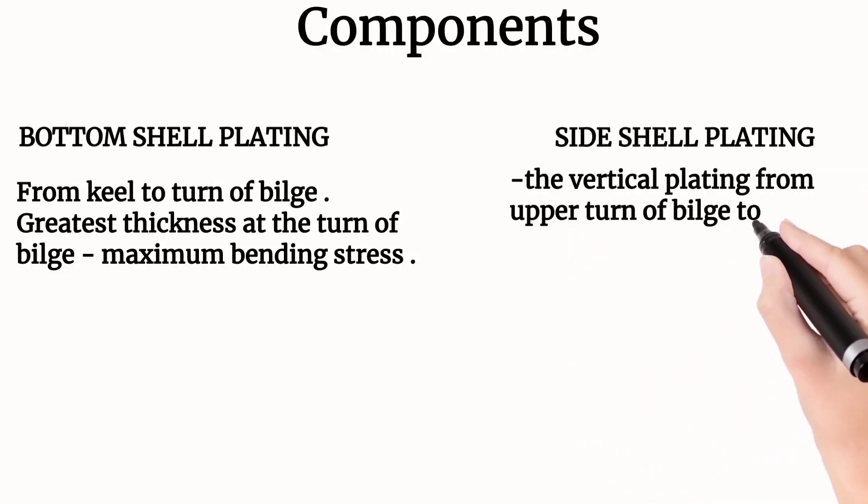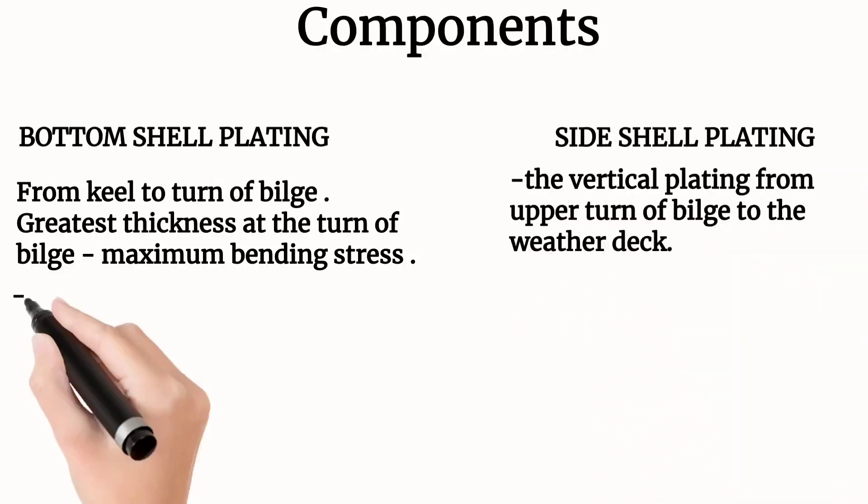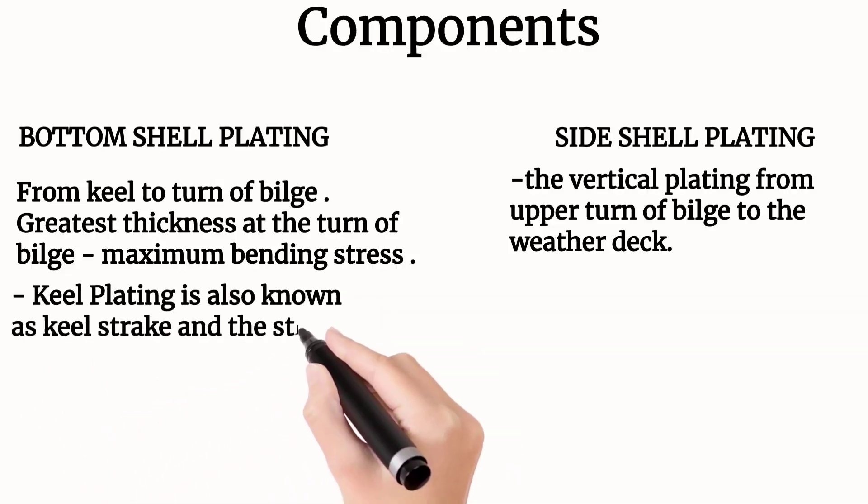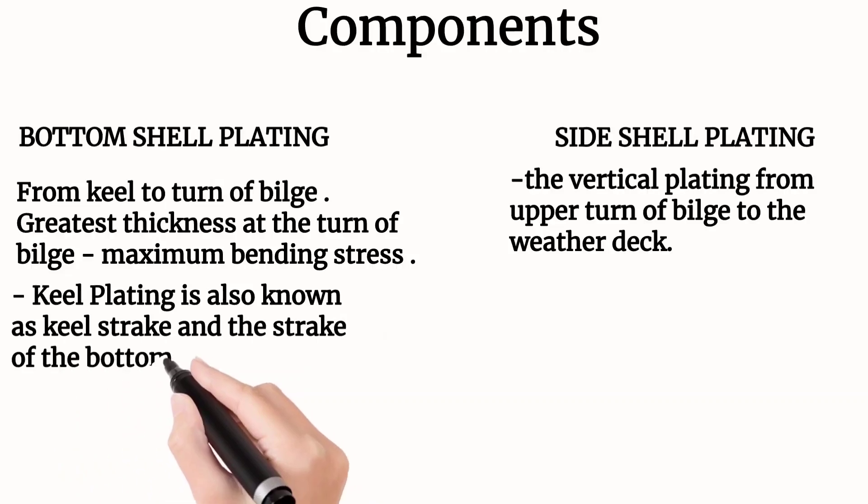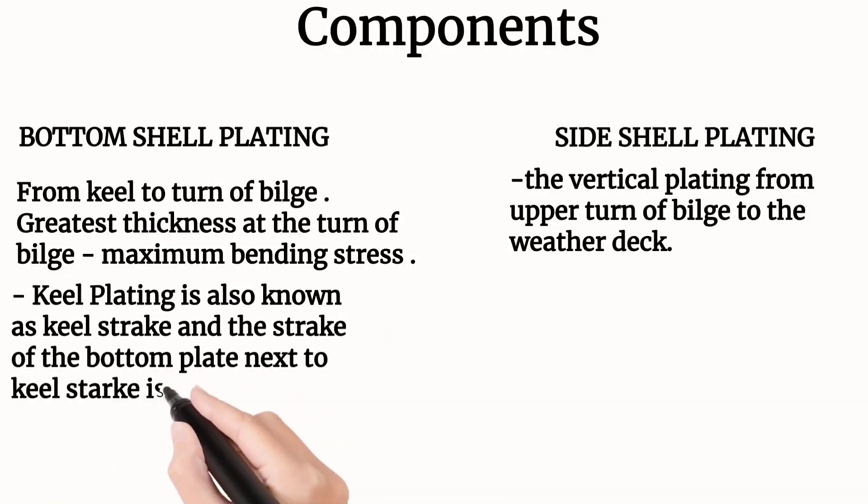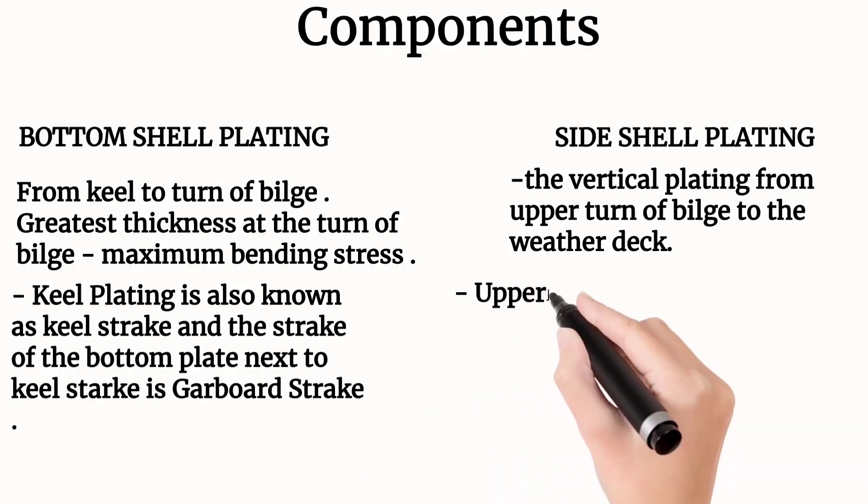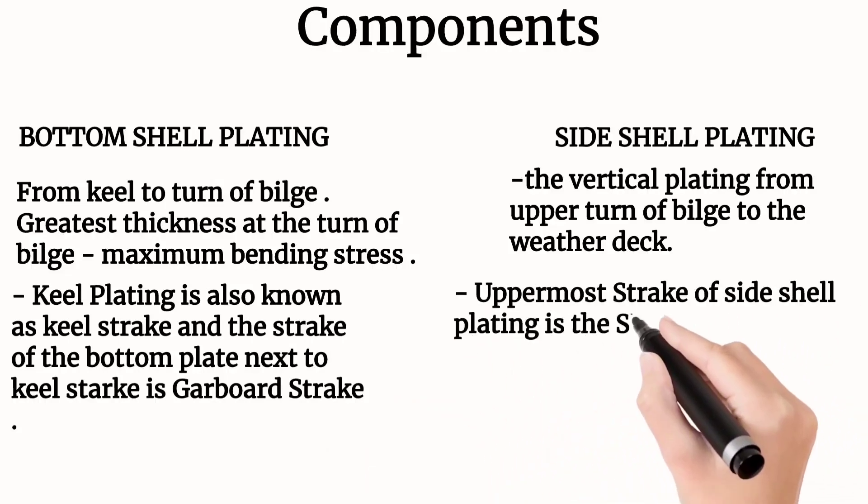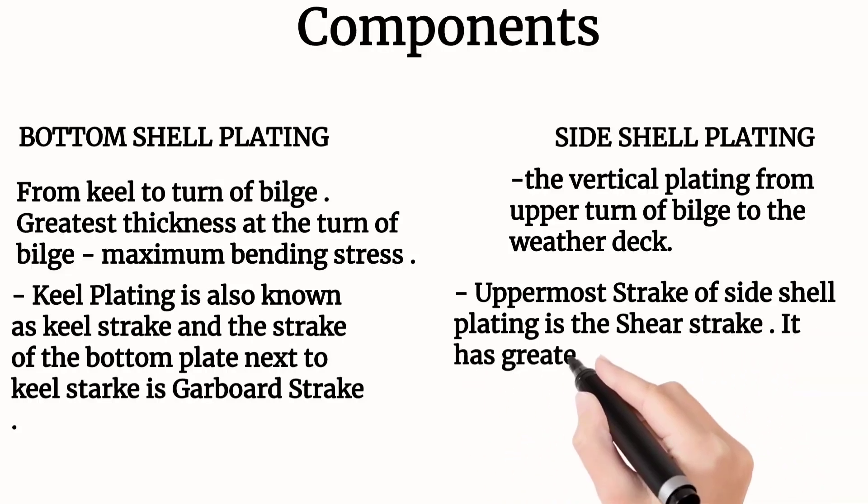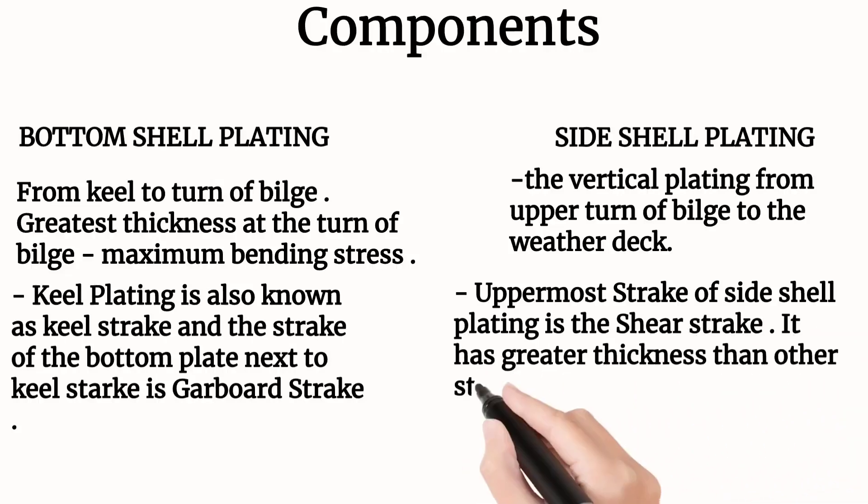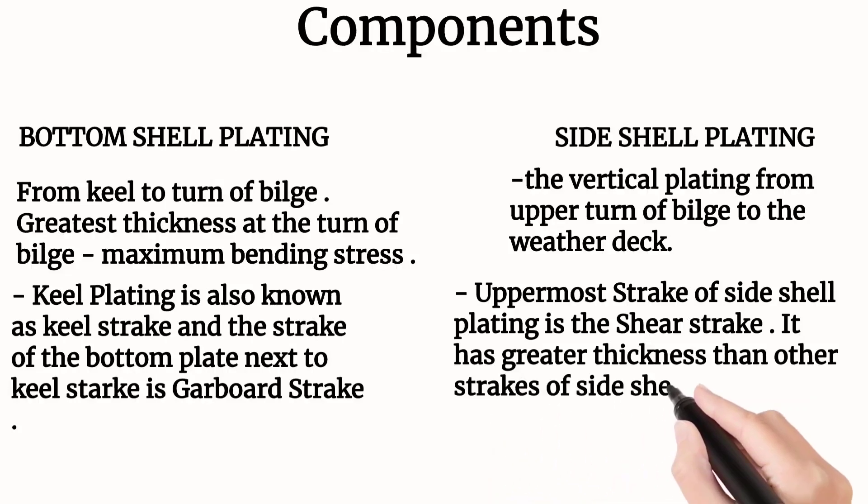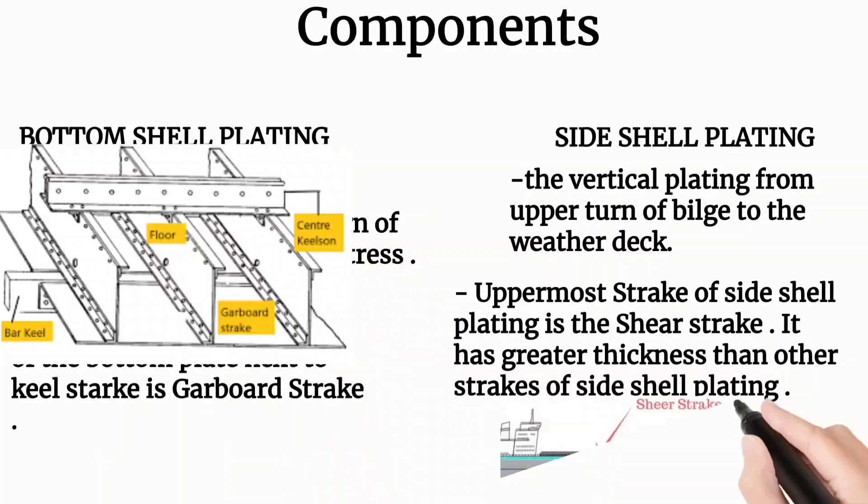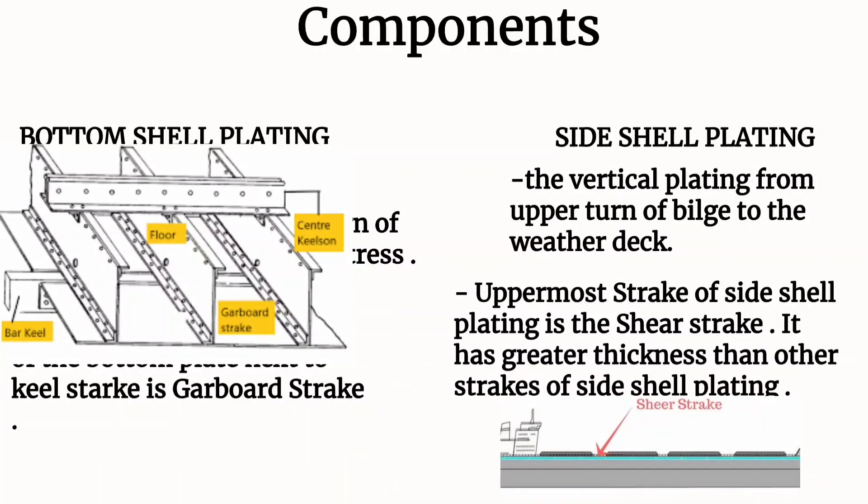The side shell plating is the vertical plating from upper turn of the bilge to the weather deck. The keel plating is also known as keel streak, and the streak beside the keel plating or keel streak is known as garboard streak. The uppermost streak of the side shell plating is the shear streak. It has greatest thickness than the other streaks of the side shell plating due to its distance from neutral axis. In this picture you can see the shear streak.